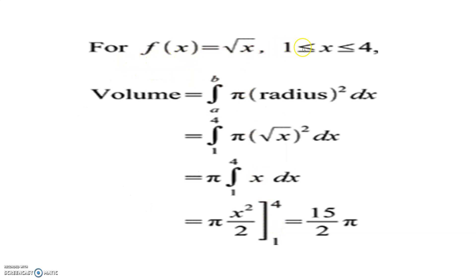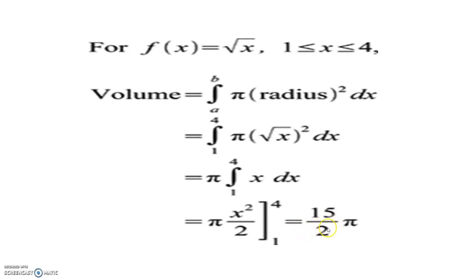Example: f(x) equals root x, lower limit 1, upper limit 4 (since 1 ≤ x ≤ 4 is given). Using the volume formula V equals pi times integral from a to b of f(x) squared dx: (root x) squared equals x by the law of indices. So V equals pi times integral from 1 to 4 of x dx. Integration of x is x squared upon 2. Substituting: 4 squared upon 2 minus 1 squared upon 2 equals 16 upon 2 minus 1 upon 2, giving 15 upon 2 times pi cubic units.